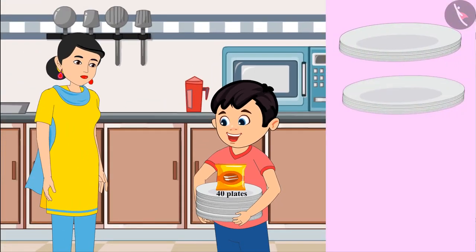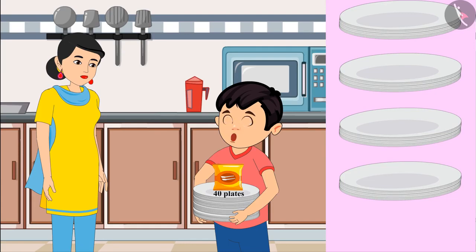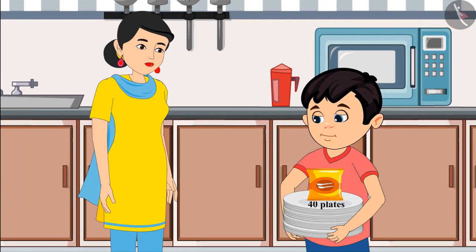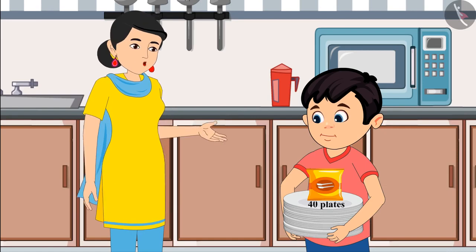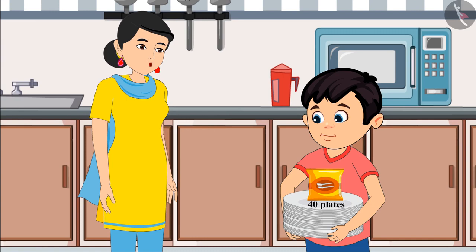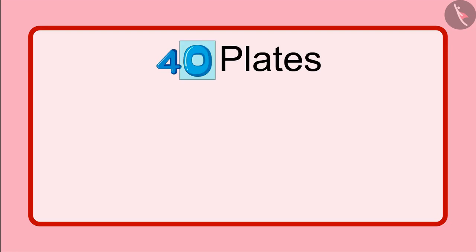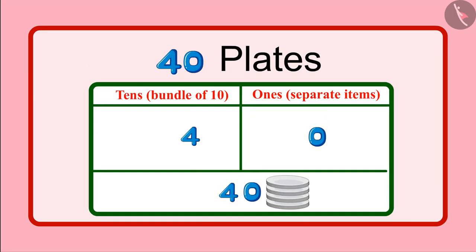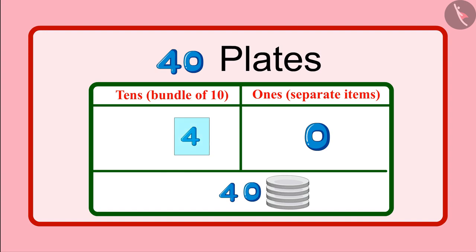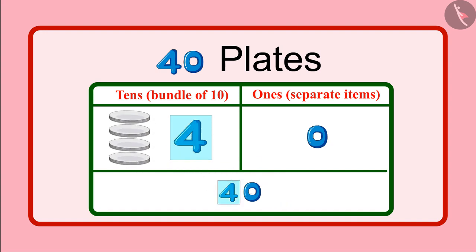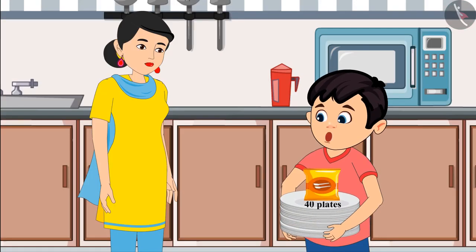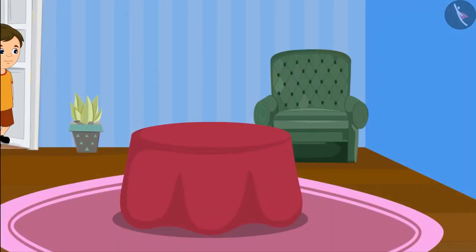Choto says the packet means four groups of 10 plates and another group of 10 plates. Mother corrects him: 'No, no Choto, you are reading it wrong. It's written 40 plates, which is four groups of 10 plates.' Choto asks about the zero. Mother explains: 'Zero is written in the units place, which means not a single loose plate. The 4 means four groups of 10, so a total of 40 plates.' Choto says: 'Now I have understood, mommy.'